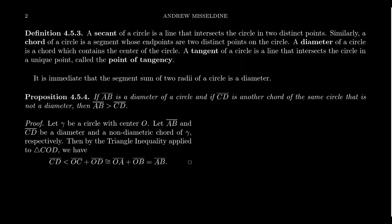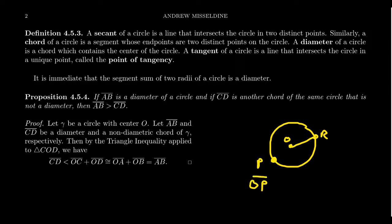Recall that in congruence geometry, a circle is the set of all points which have a fixed radial distance away from some point O, based upon some radius r. We're looking for all points P on the circle such that OP is congruent to r. We can actually define a circle without any notion of distance whatsoever.